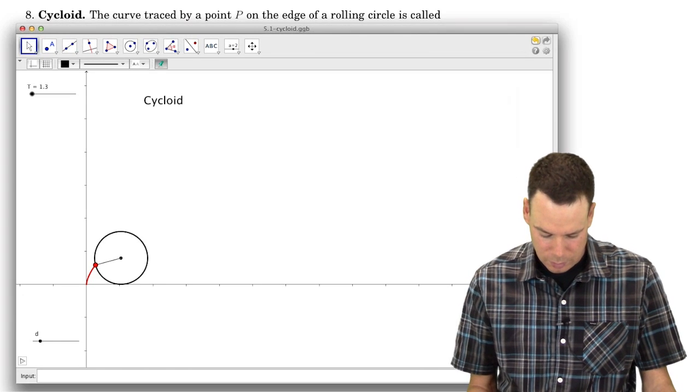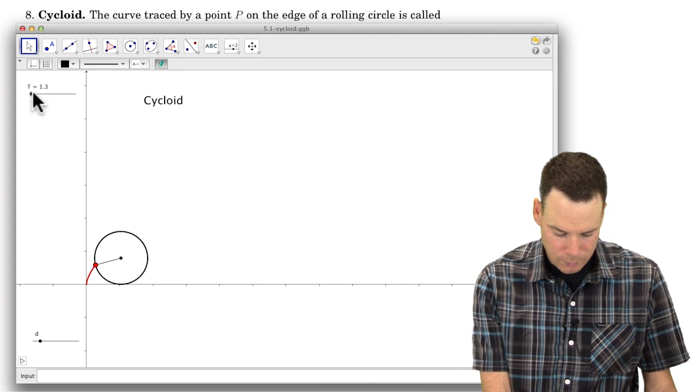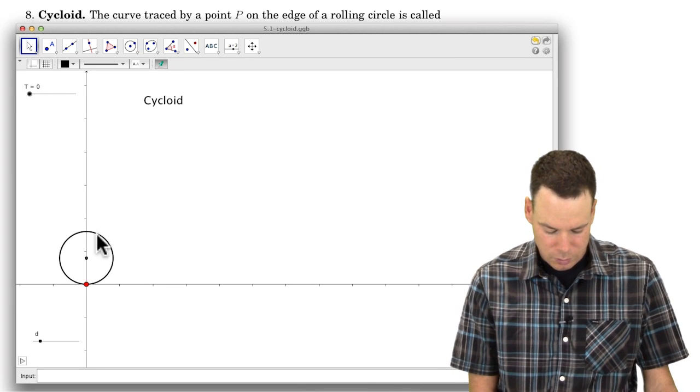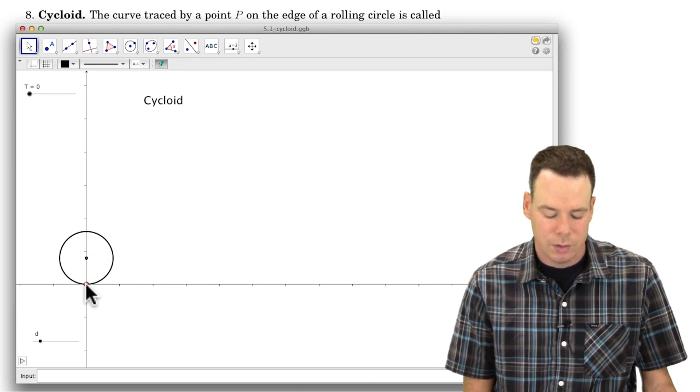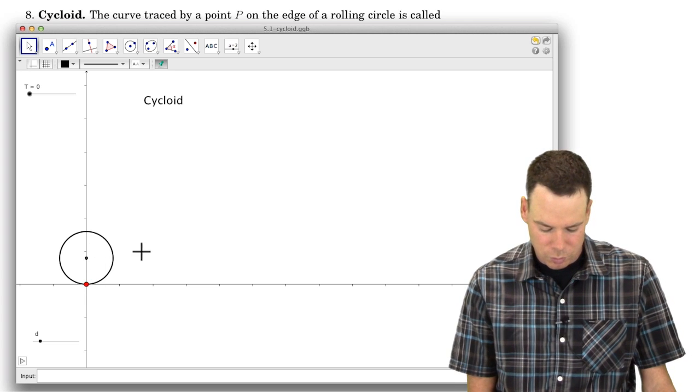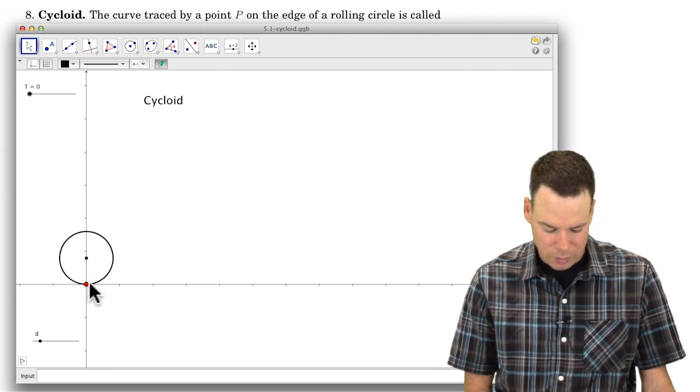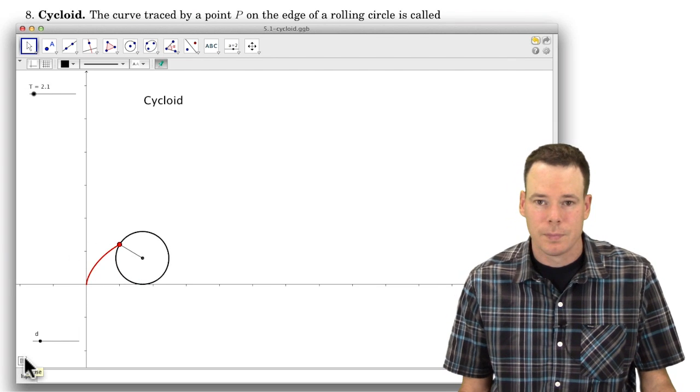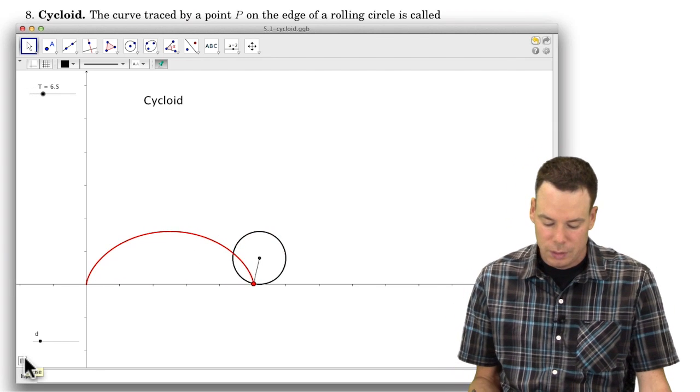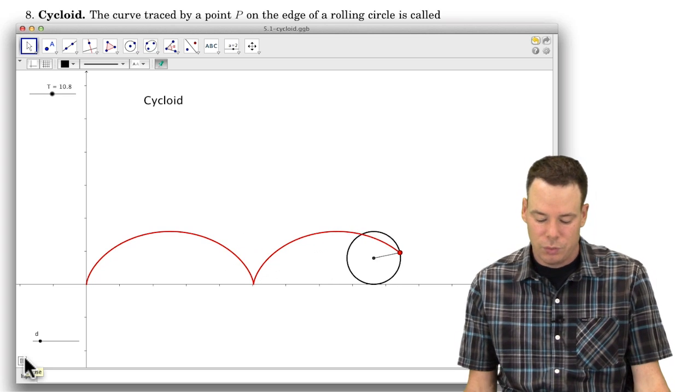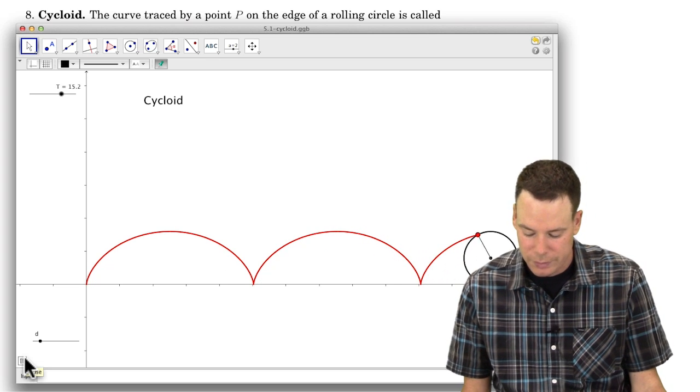Let's have a look at this in motion. So we've got our circle. We've identified a point on the circle in red. We're going to let our circle roll off to the right and see what that red point traces out. So as the circle rolls, this red point is tracing out this red curve and that's the curve we call the cycloid.